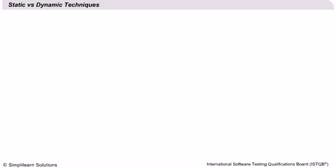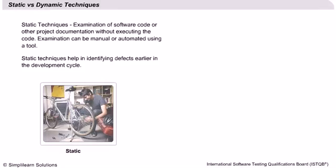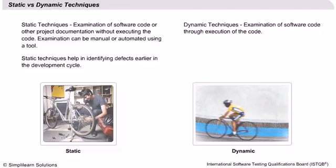The key difference between static techniques and dynamic techniques is that static techniques are used to examine the code or other project artifacts without actually executing the code, while dynamic techniques are used to examine the code through execution of code. Both techniques can be executed manually or through use of an automated tool. Both techniques are complementary and should be used together for best results.